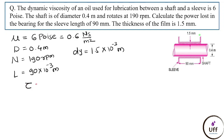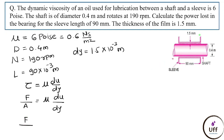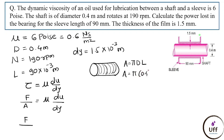By Newton's law of viscosity: τ = F/A = μ(du/dy). The area here is the circumferential area = π × d × L = π × 0.4 × 90 × 10⁻³ = 0.1131 m².